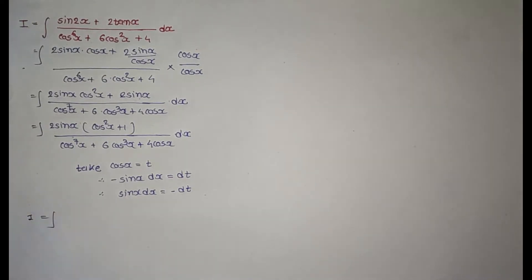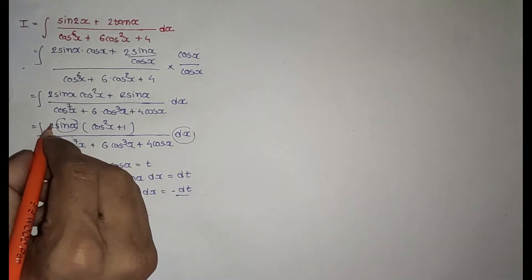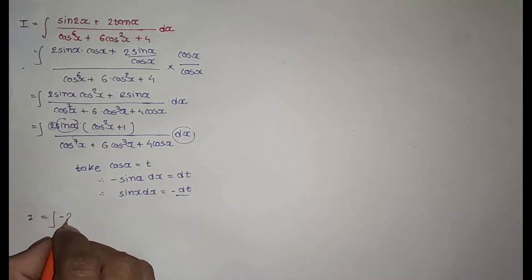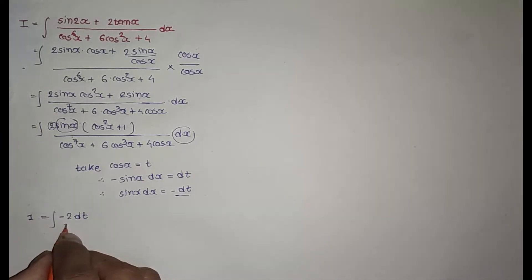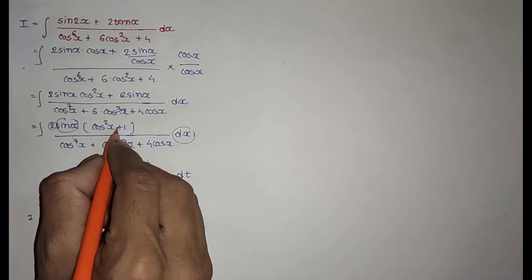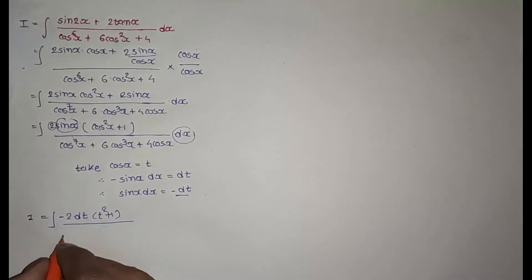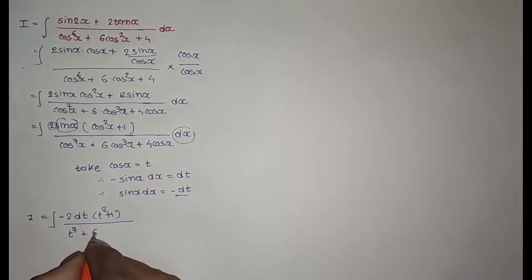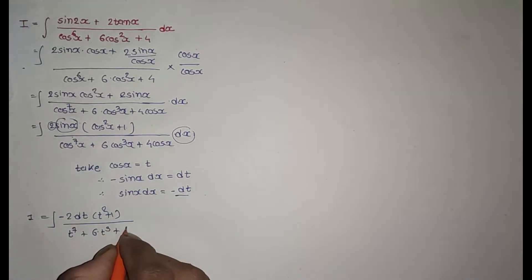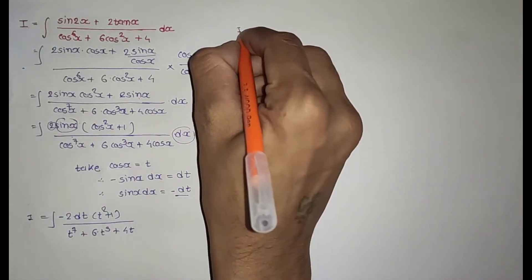So sin x dx equals minus dt. The integration becomes minus 2 times dt, and cos²x + 1 becomes t² + 1, over t^7 + 6t³ + 4t.